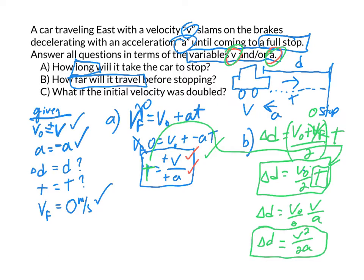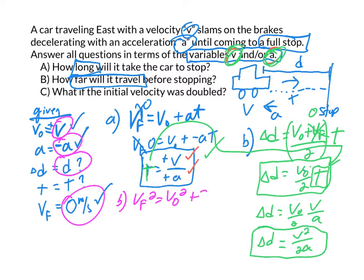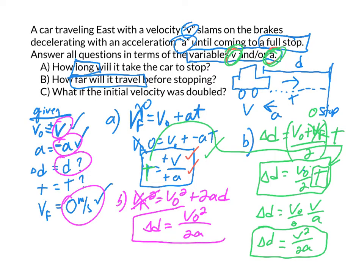Your answer should only be in terms of the variables given — in this case v and a — and we have v and a. That said, I probably wouldn't have done it that way. I would have looked for a more direct approach. Since we're given v, a, and vf, and we're looking for distance, I'd choose the equation with those four variables: vf squared equals vo squared plus 2ad. When you do the algebra with vf equal to zero, you get the exact same answer — displacement equals vo squared over 2a — but you save yourself a step.